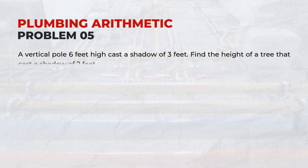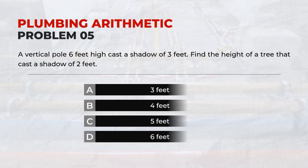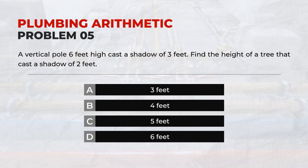A vertical pole 6 feet high casts a shadow of 3 feet. Find the height of a tree that casts a shadow of 2 feet. Answer: B. 4 feet.